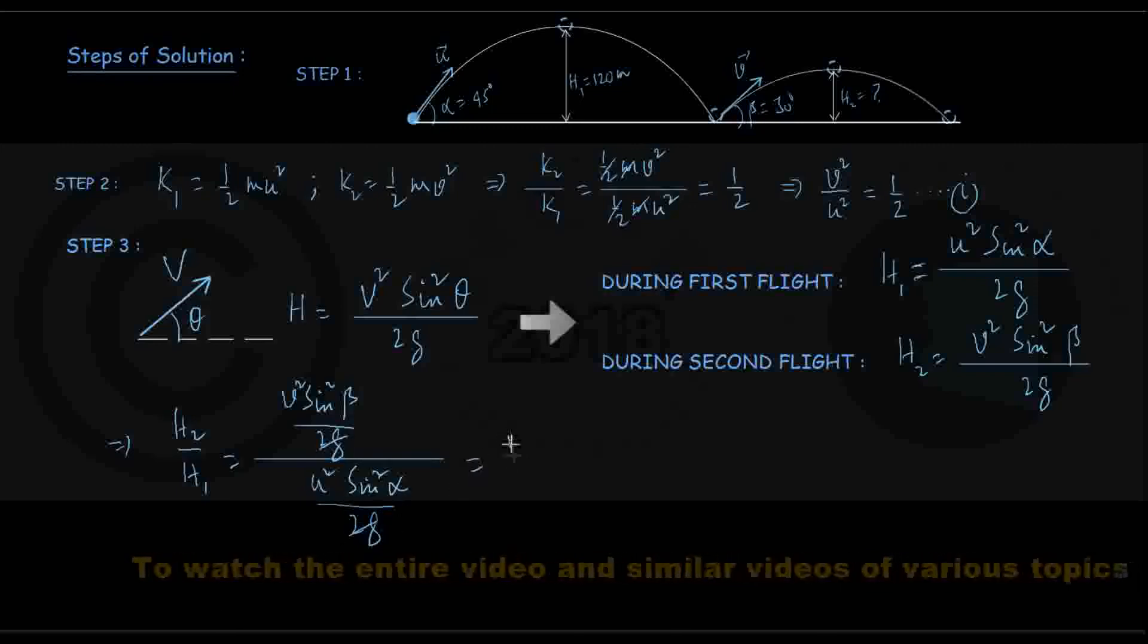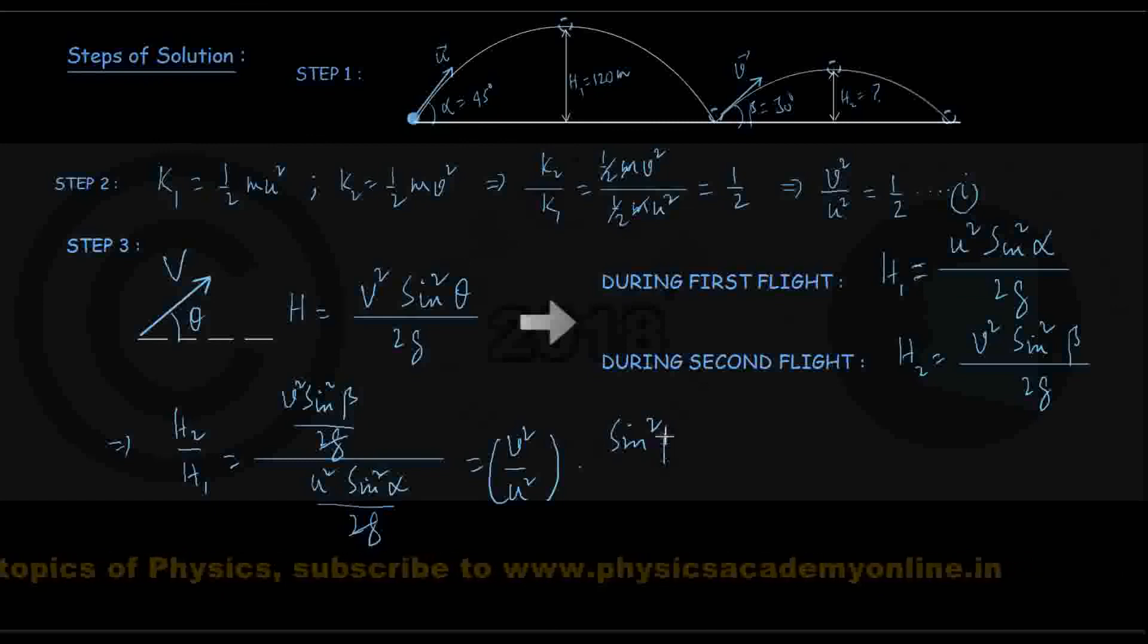We can write it as v squared upon u squared, let me group them together, into sin squared beta divided by sin squared alpha.